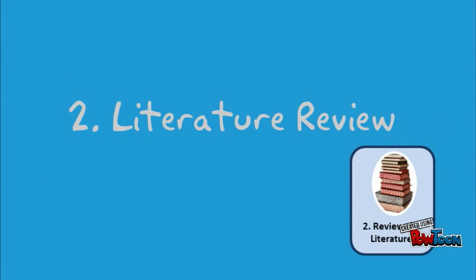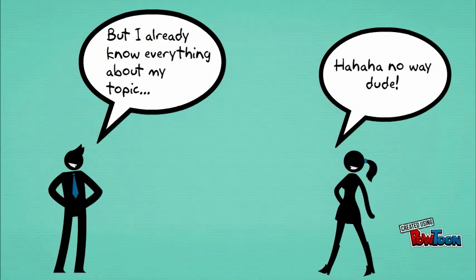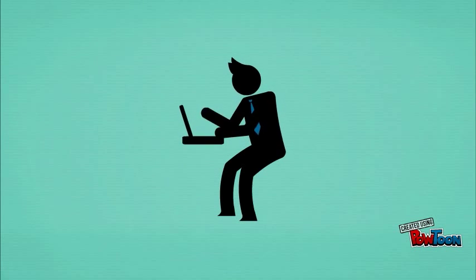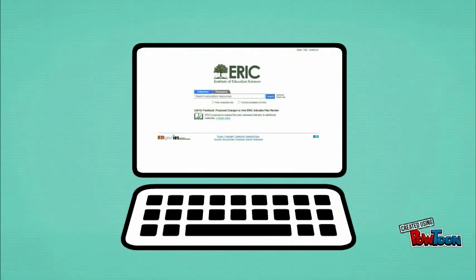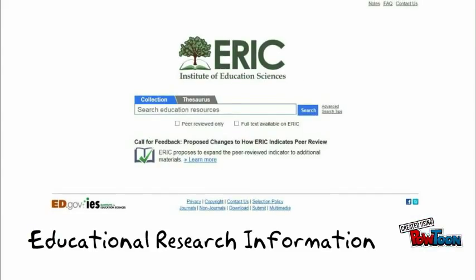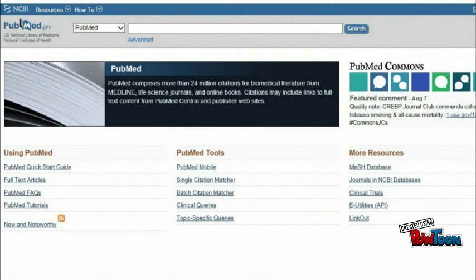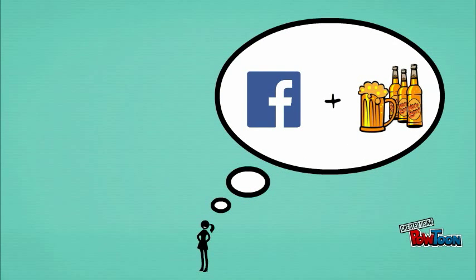The second step is a review of the literature, where you familiarize yourself with published studies on your topic. This starts with developing a plan for which databases and search terms to use. For example, if you're planning on studying something education related, you may begin your search with a research database like ERIC, which stands for the Educational Research Information Center. Since your topic is health related, you'll begin with PubMed. You'll begin by asking yourself: what is the state of the literature related to Facebook alcohol displays?